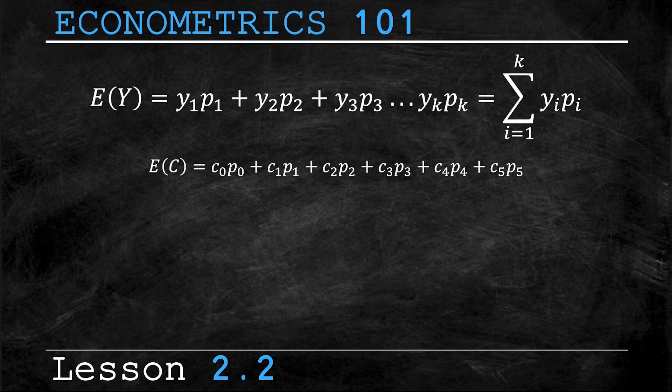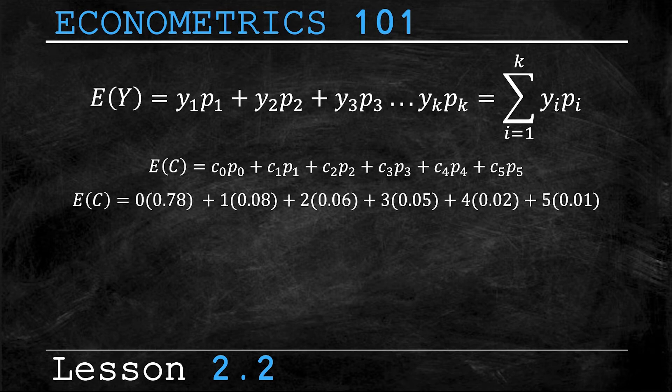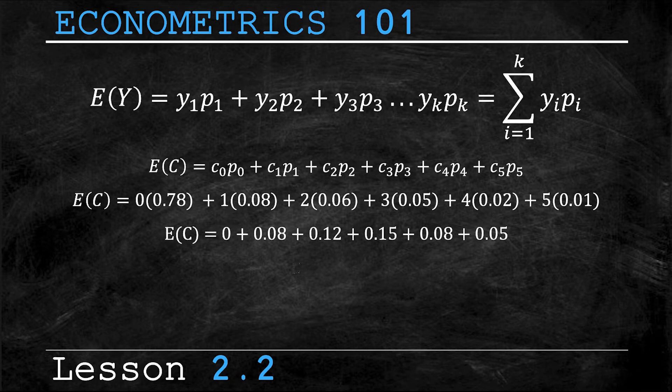Well, from the table we just looked at, let me sub in these values for c₀ and p₀ through c₅ and p₅ and simplify the equation. So this is just those values plugged in. And with a little bit of simple algebra, voila, now we know that the expected value of c is 0.48.